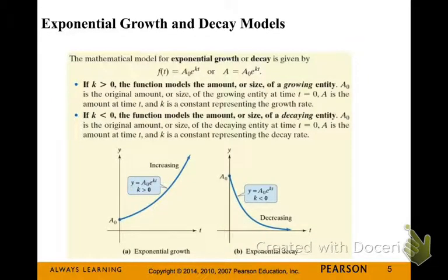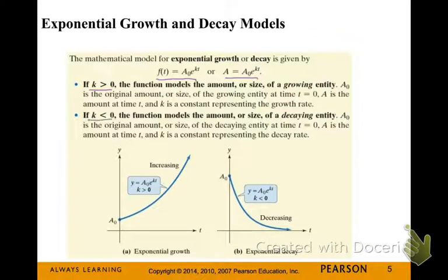Let's look at the exponential growth and decay models with base e. The formula is F(T) = A₀ × e^(kT), where A₀ is your beginning amount. If the k value is positive, it's a growth situation. If k is negative, that makes your base less than 1, so it's decay.